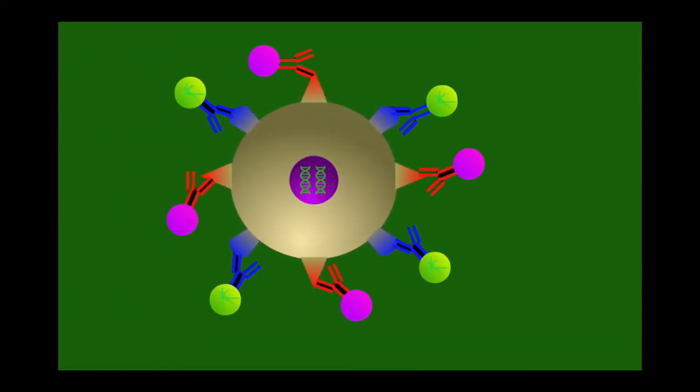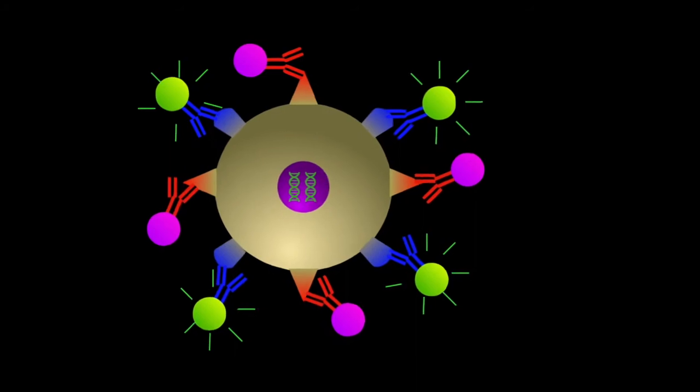A laser is shot at one cell at a time, which makes the label fluoresce, and the magnitude of fluorescence can be detected.